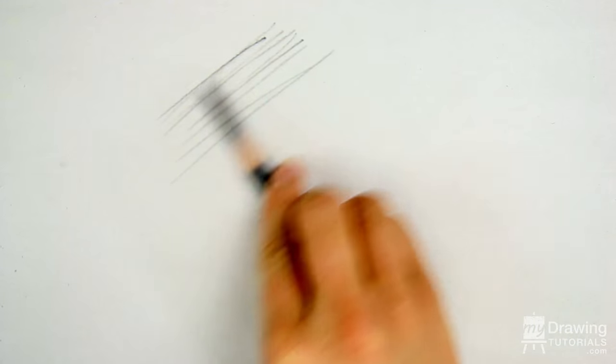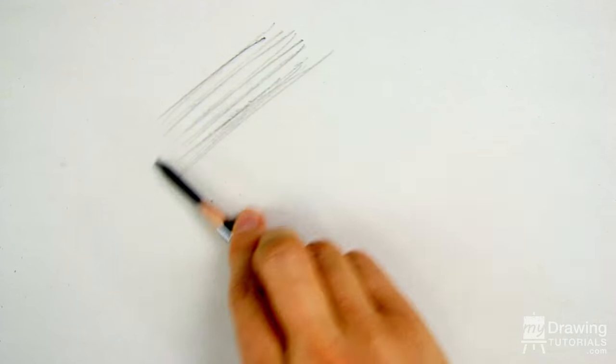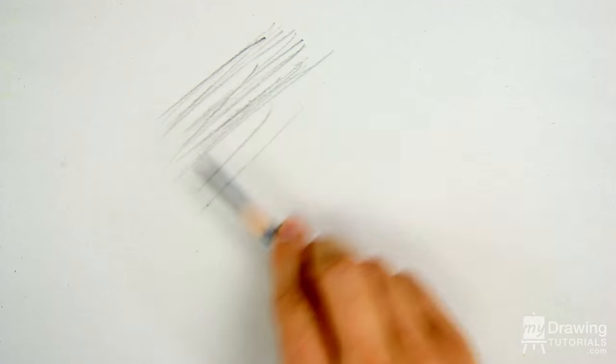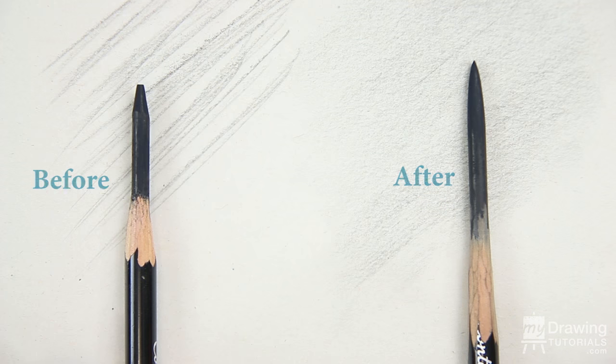At this point, if we try to use the side of the pencil, we'll get very uneven tones and sharp edges. So, we'll have to smooth out the pencil so that it looks more like this.